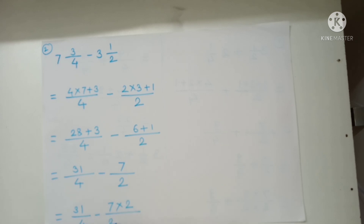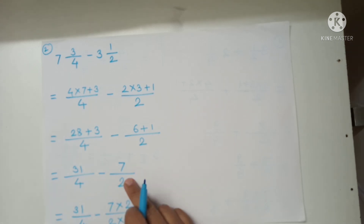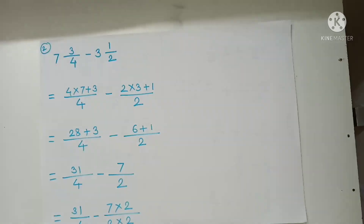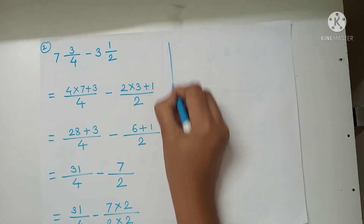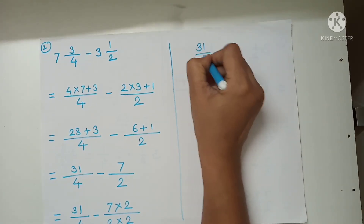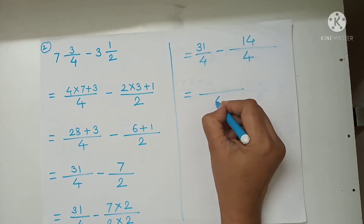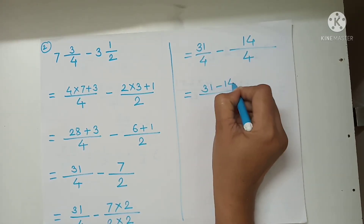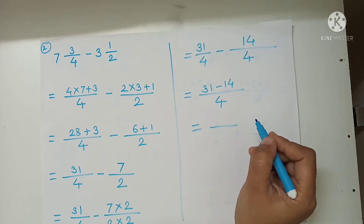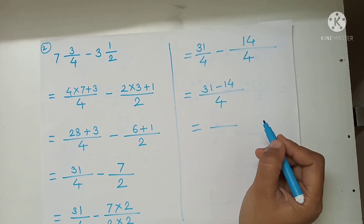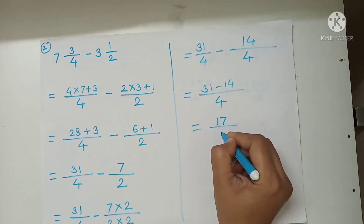We need to make the denominators the same, so multiply 7 upon 2 by 2 over 2. Next step: denominator is 4. 31 upon 4 minus 14 upon 4. Denominators are the same. 31 minus 14 is 17 upon 4.